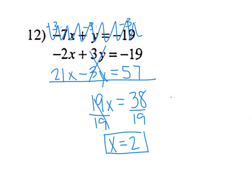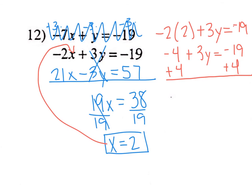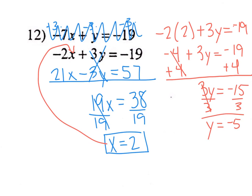I then plug x equals 2 back into the first equation: negative 2 times 2 plus 3y equals negative 19. That's negative 4 plus 3y equals negative 19. Adding 4 to the other side: 3y equals negative 15. Divide by 3: y equals negative 5. So my final solution is (2, -5).